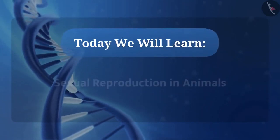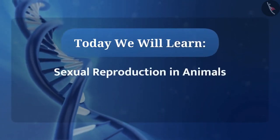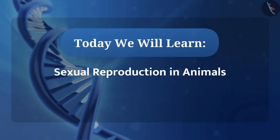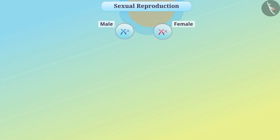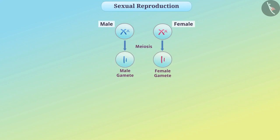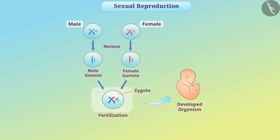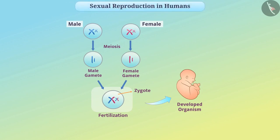We will learn about sexual reproduction in animals. We know that two parents participate in sexual reproduction. During sexual reproduction, the male germ cell is fused with the female germ cell to produce a zygote and develops into a new organism. Let's understand sexual reproduction in humans.